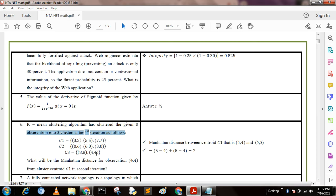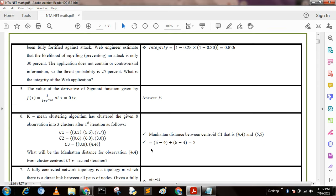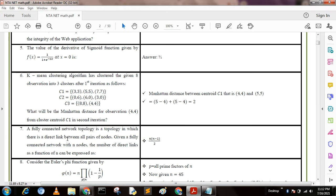What will be the Manhattan distance for observation (4,4) from cluster center C1 in second iteration? Since (4,4) is between (4,4) and (5,5), the answer is 2. Manhattan distance between center C1 (5,5) and (4,4) is |5-4| + |5-4| = 2.